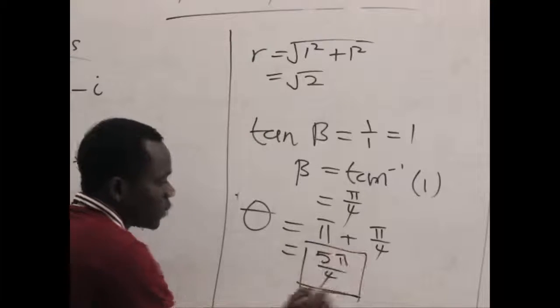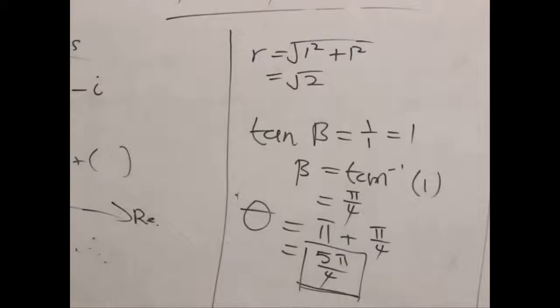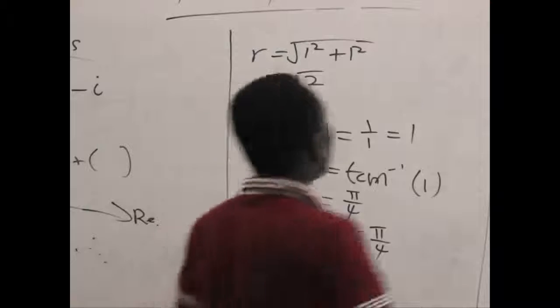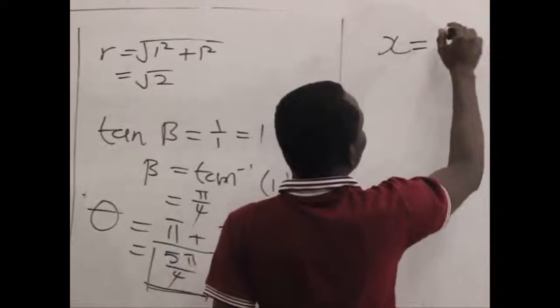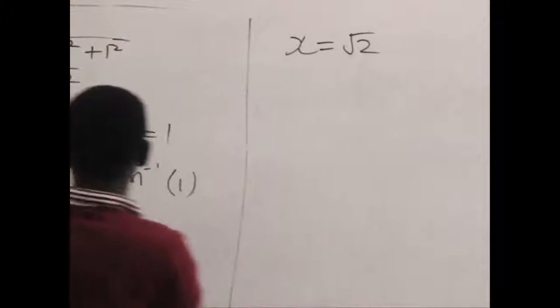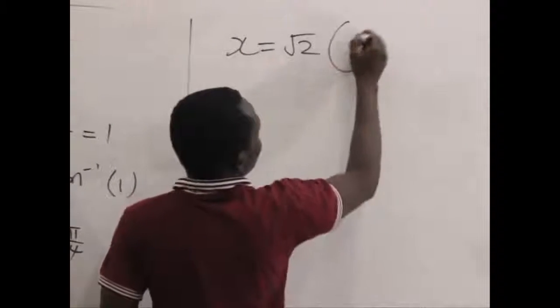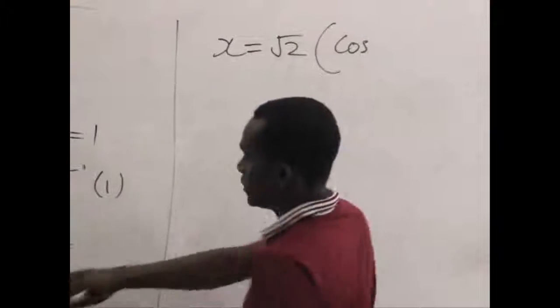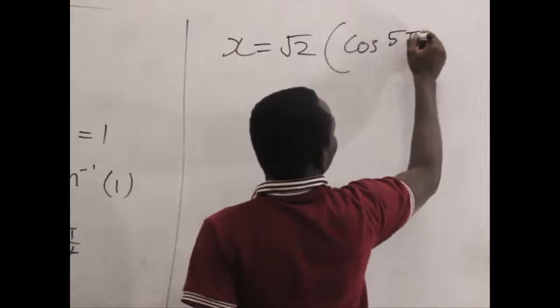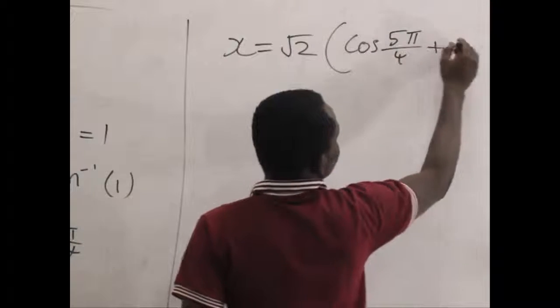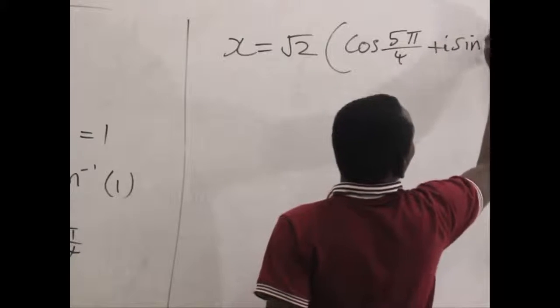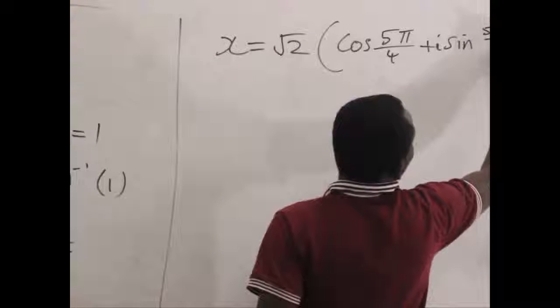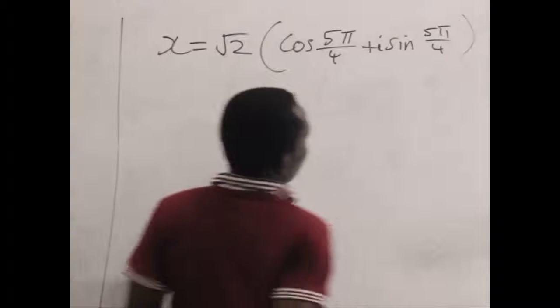Now, so we can rewrite our complex number in polar angular forms. So for polar form we are going to have x equal to root two which is r, so that bracket will be cos theta which is five pi over four plus i sine five pi over four.